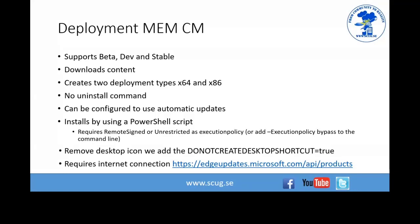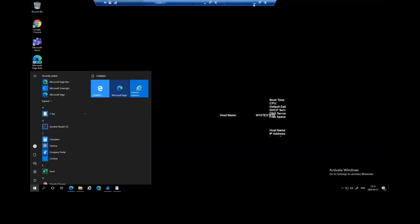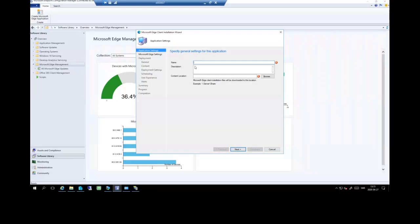Deploying with Configuration Manager: you can deploy Beta, Dev, or Stable. It downloads the content and creates two deployment types — no uninstall command though. It installs using a PowerShell script so you can select whether automatic updates should be enabled. In ConfigMgr 1910 it will always disable automatic updates, which is extremely important — don't deploy it thinking it'll update automatically and end up with a vulnerable browser. In MEM 2002 you can choose. The versions shown in the wizard come from a Microsoft API endpoint.